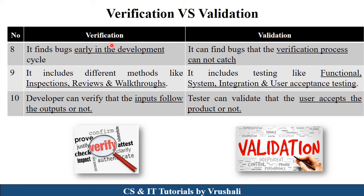In verification, developers find out bugs at an early stage because they perform it on each and every feature. If there are any errors, developers can easily fix those errors. Whatever errors are not found in the verification process, these errors are found out in the validation process. In verification, there are different methods like inspection, reviews, and walkthroughs.